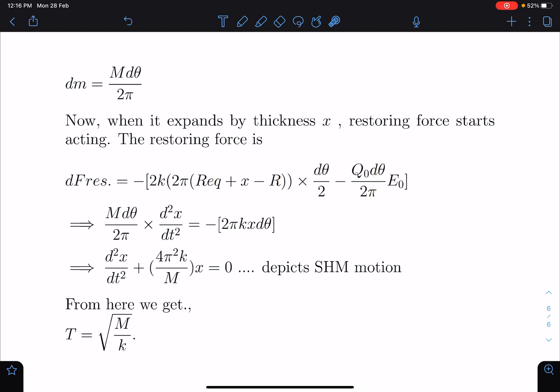So you will see I am going to get this dF_restoring. I am writing as dm·(d²x/dt²) and that should be equal to 2kx·dθ. So the factors are getting cancelled.